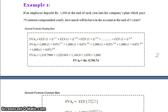Calculating each term: Year 1 = ₹1,310.796, Year 2 = ₹1,225.043, Year 3 = ₹1,144.90, Year 4 = ₹1,070, Year 5 = ₹1,000. Adding all values together gives FVA(5) = ₹5,750.74.